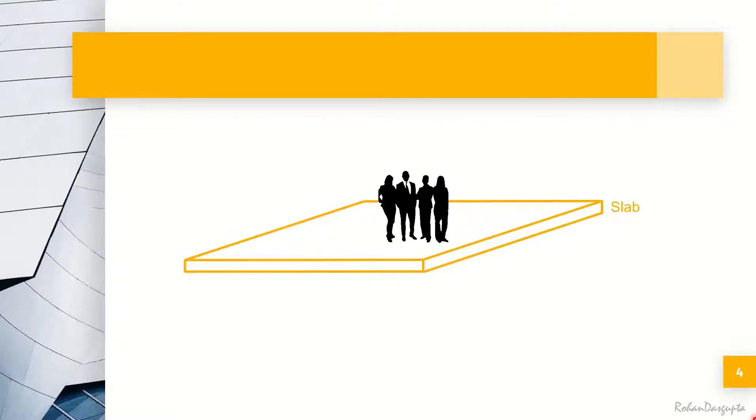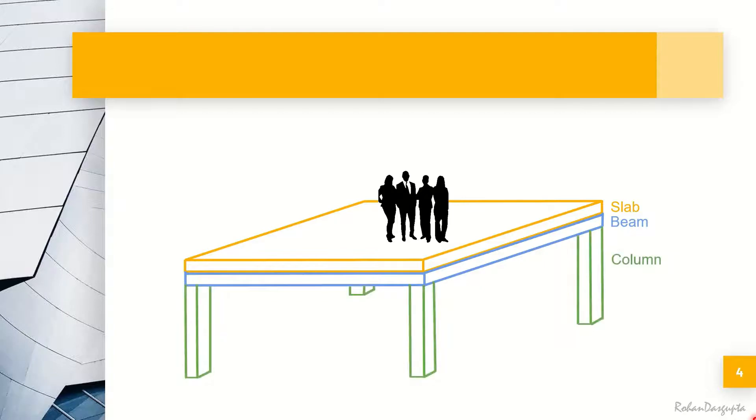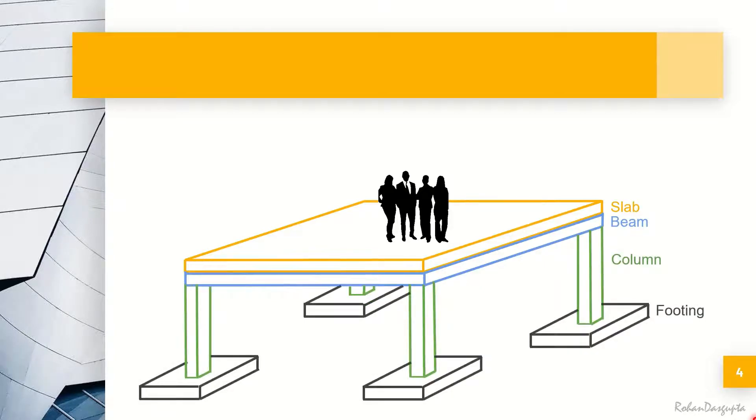The slab then transfers that load onto the beams which are beneath the slab. These beams then transfer these loads onto the columns and the columns do the same to the footing and the footing finally transfers this load to the ground.